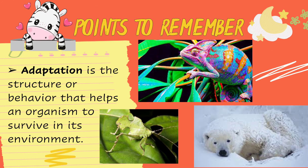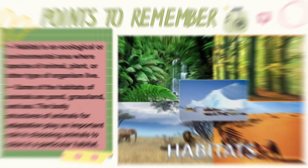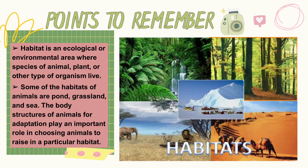Before we continue our journey, let's learn some vocabulary. Adaptation is the structure or behavior that helps an organism survive in its environment. Marine or aquatic animals are animals living in water. Land animals are animals living on land. Population refers to the total number of animals in a particular habitat.